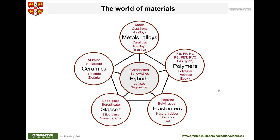Based on our engineering needs, we can categorize materials into three main categories — sometimes grouped into five or six — but generally we have metals, polymers, ceramics, and combinations of them which we call hybrids. Glasses are usually grouped under ceramics, and elastomers are grouped under polymers. Elastomers are polymers that can stretch many multiples of their original size.